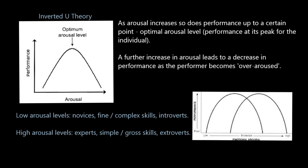Up to where we get to optimal arousal level. What we've got here is what some people like to call a zone of optimum functioning. If I can get my arousal level in there somewhere, I am going to get peak performance — I'm going to be performing at my best. However, a further increase in arousal leads to a decrease in performance as the performer becomes over-aroused, hence why we start coming down the curve. You might see that in a rugby player in a big game who starts to get a little bit too wound up and starts to do lots of knock-ons or miss passes, or you feel you've had to force something because the result really matters, leading to more and more errors.